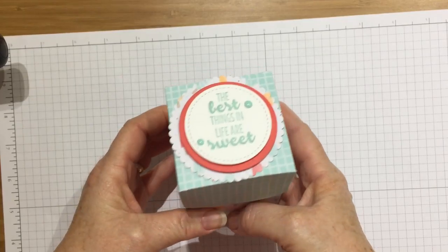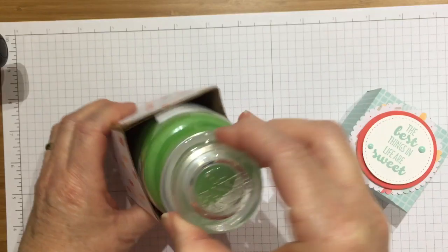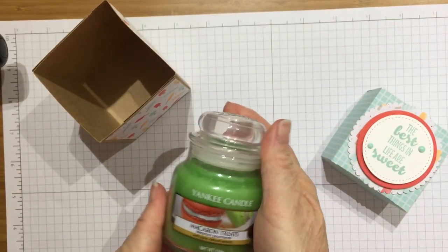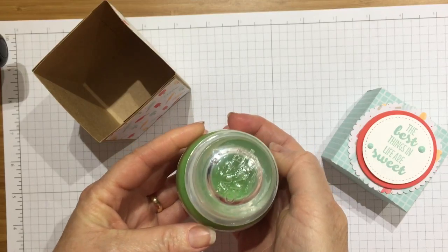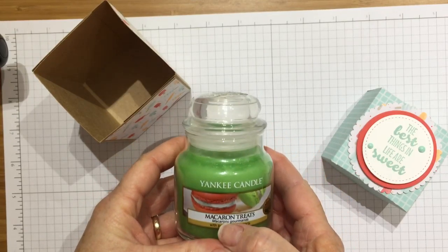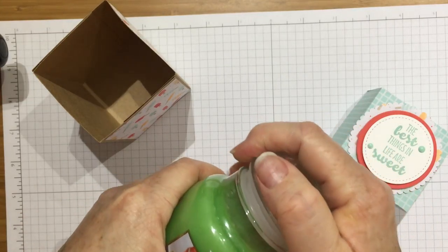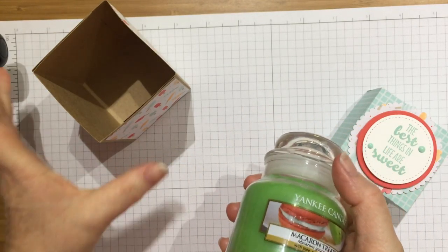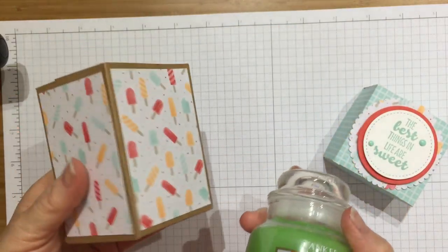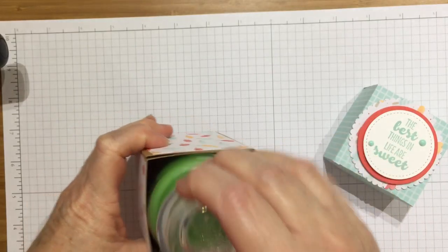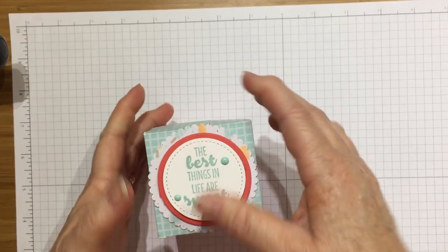This is a box that I've made to hold a candle. This lovely little Yankee candle jar I bought as a thank you present for a friend who did some babysitting for me recently. It's called Macaron Treats and it smells so sweet. I made a box to hold it using the designer series paper from the Tasty Treats range, and I made it to fit, which I'm really rather pleased about.